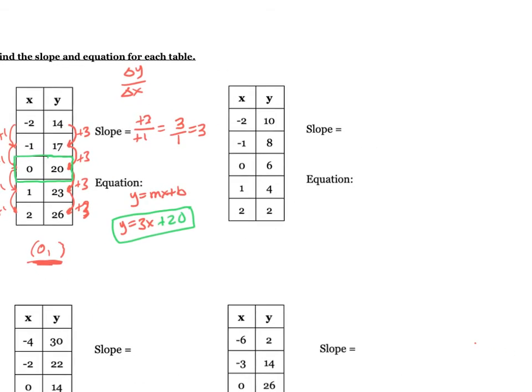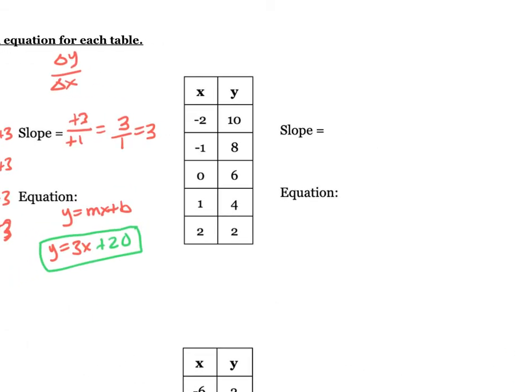Now let's move over to the second example to the right. Again, remember the slope is the change in y over the change in x. So let's find the change in the y values. It looks like this time it is dropping 2 each time, going from 10 to 8, 8 to 6, 6 to 4, 4 to 2. That's subtracting 2 every time. So my change in y is negative 2.